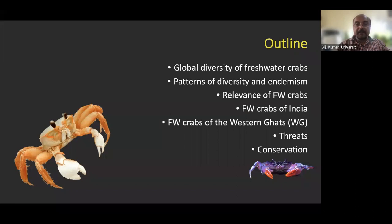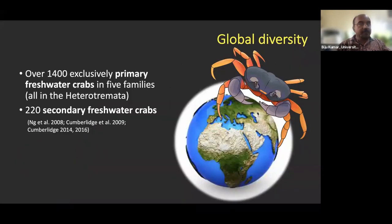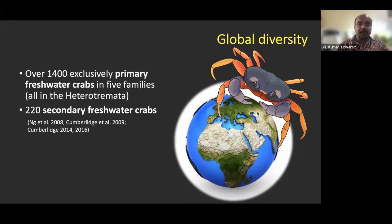When talking about global diversity of crabs, there isn't much work done in many parts of the world, but as of now there are around 1,400 species based on published reports. Public domain databases like WoRMS show around 1,500 plus species. In addition to primary freshwater crabs, there are 220 secondary freshwater crabs.